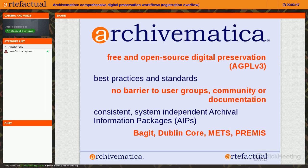Today we're going to focus on Archivematica, which is free and open-source digital preservation. It operates on best practices and standards — in particular, Archivematica was designed based on the OAIS model, which is sort of the common language for digital preservation. Archivematica was based on OAIS but we've expanded our functionality quite a bit since the early days. There is no barrier to Archivematica public user groups or discussions — all of our community, documentation, and code is open and available for review.